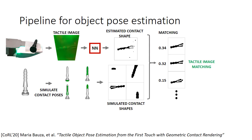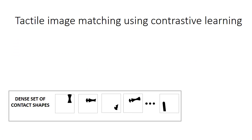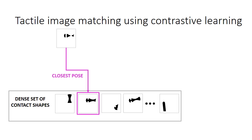For that, we use tactile image matching, which is a way to give a probability to each of the pre-computed simulated contact shapes of being the closest one to the one that comes from the sensor. To train tactile image matching, we use the dense set of poses and contact shapes pre-computed in simulation. We generate a random contact pose and its contact shape, and find which one is the closest from the dense set. Then we generate a label that says how likely each element is to be the closest one in pose distance to the random contact pose.